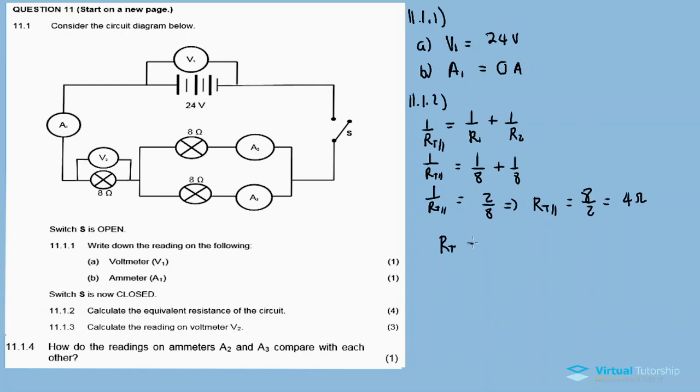R_total for the whole circuit equals R_parallel plus the 8 ohm resistor. This equals 4 plus 8, which equals 12 ohms. This is our final answer.